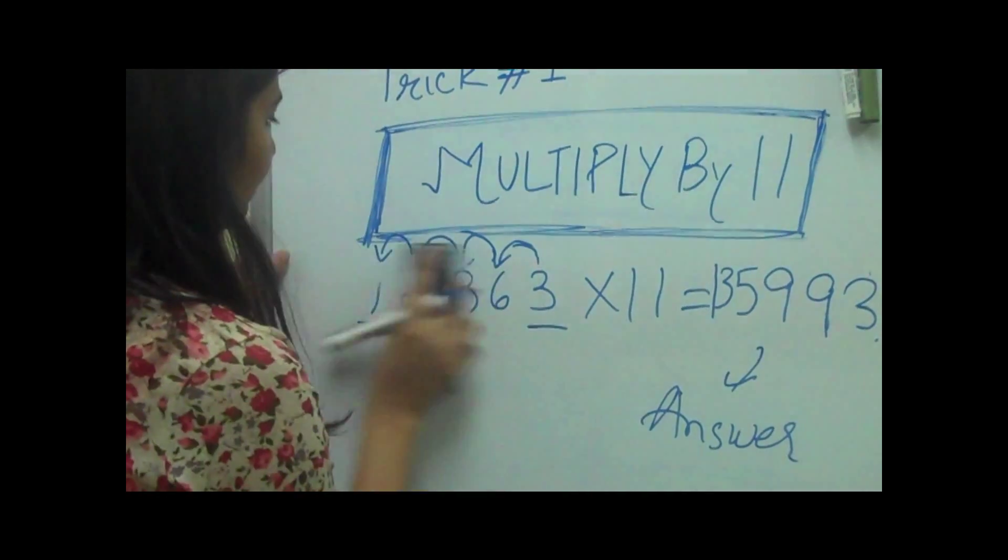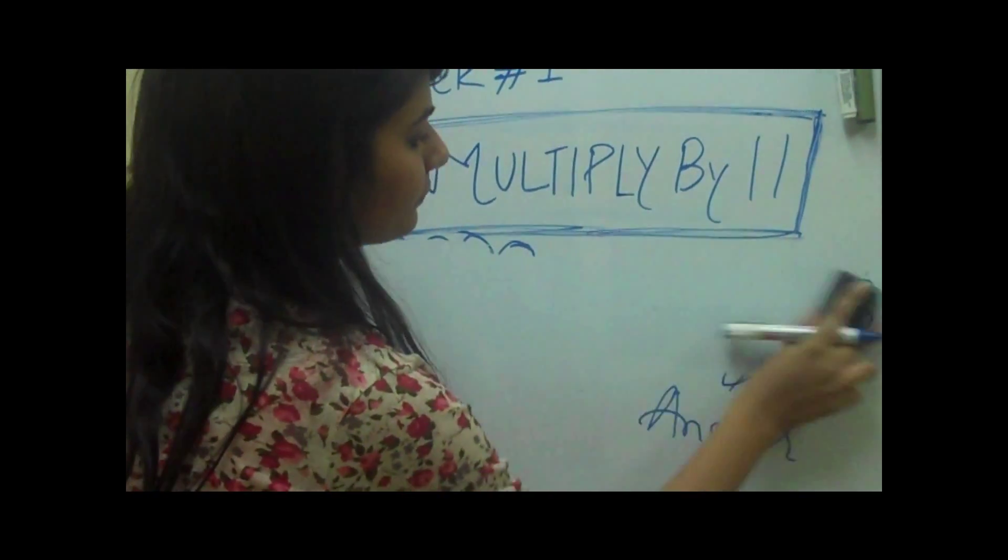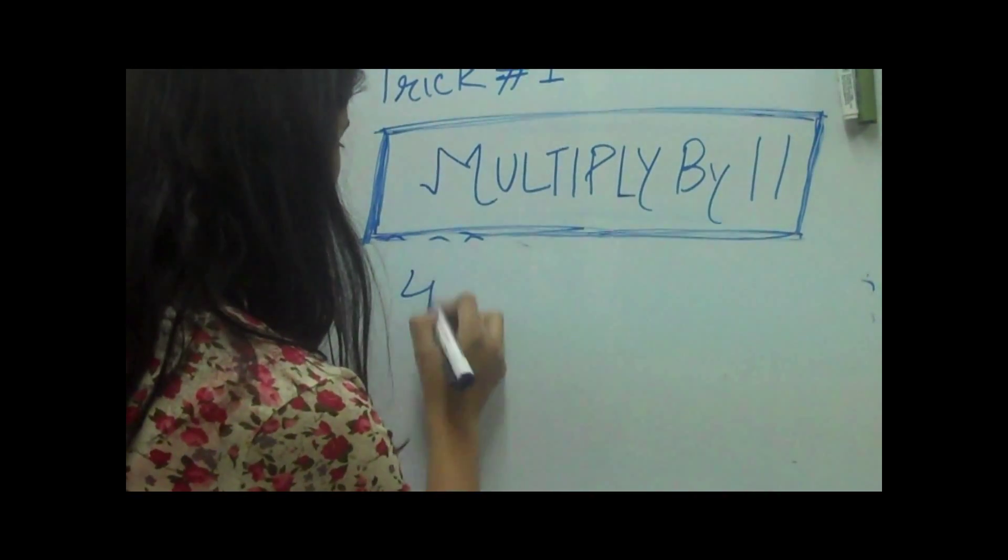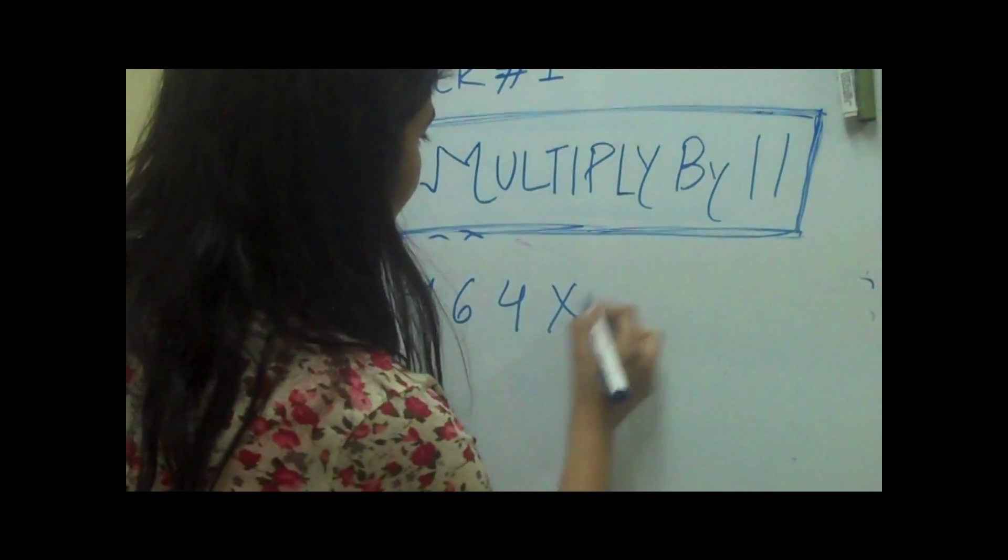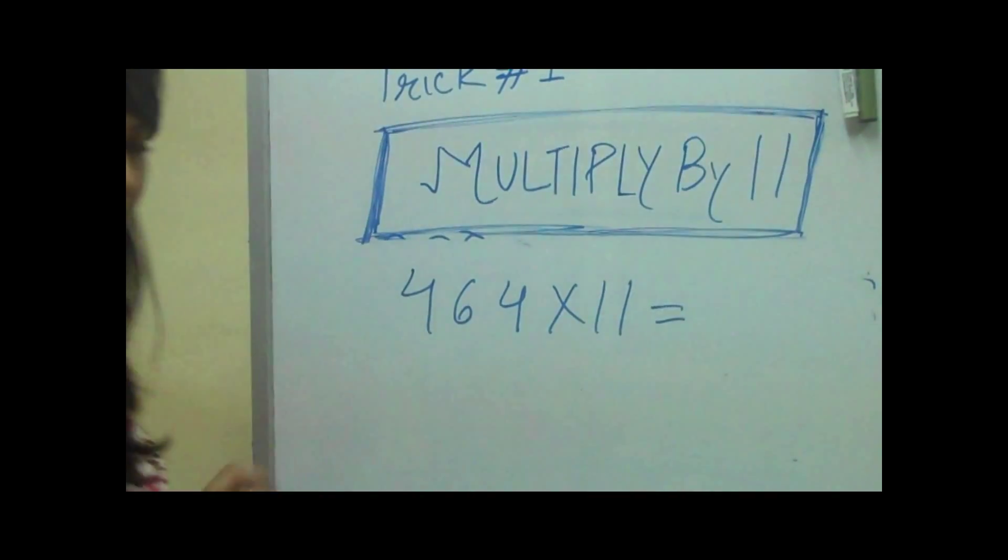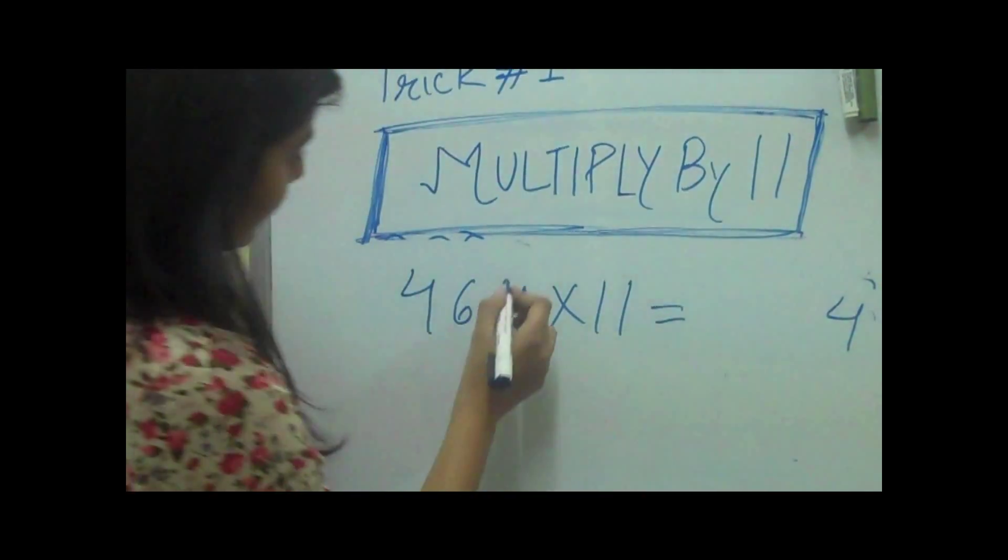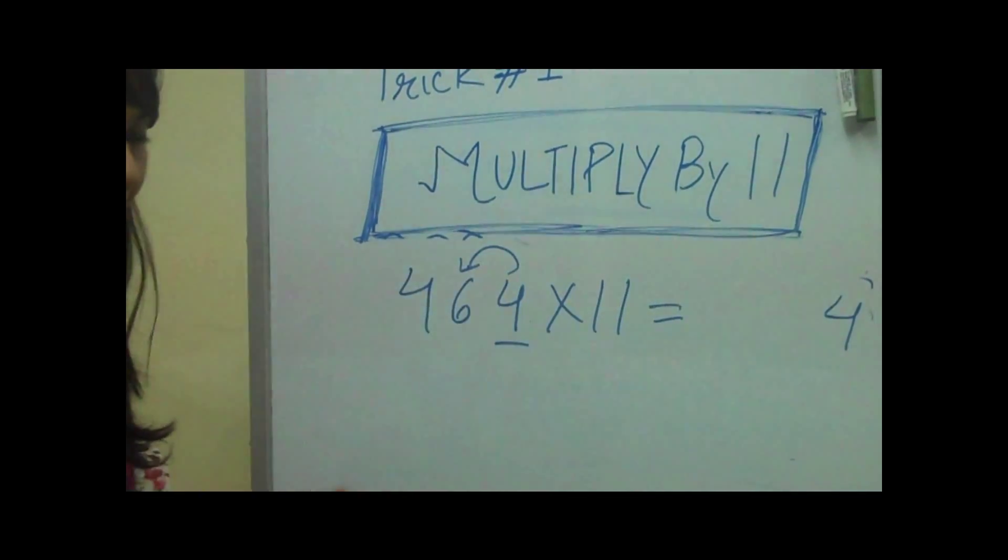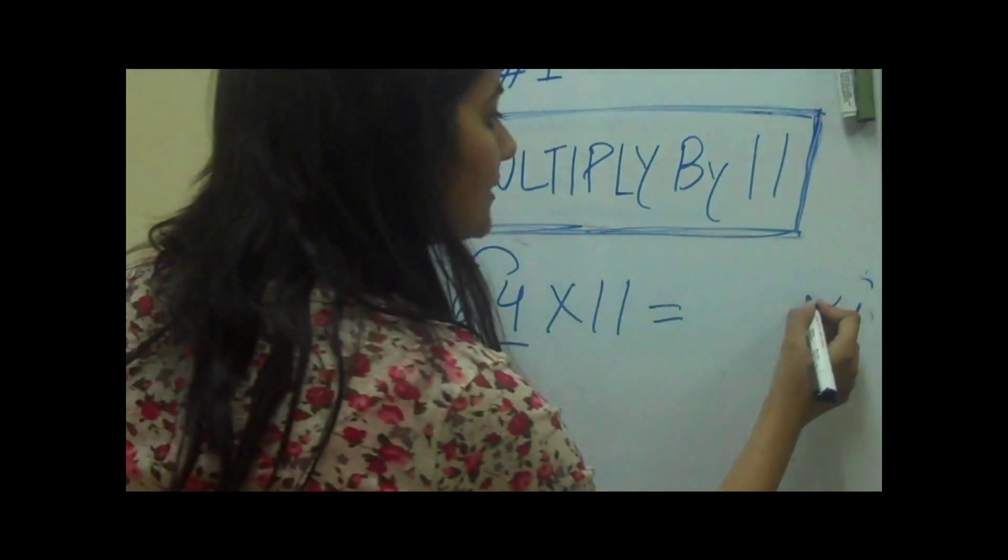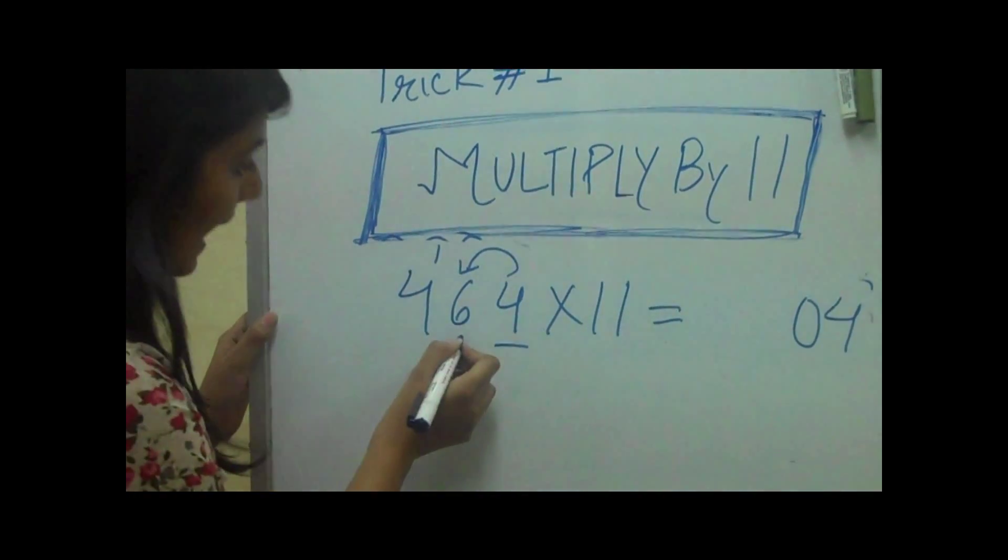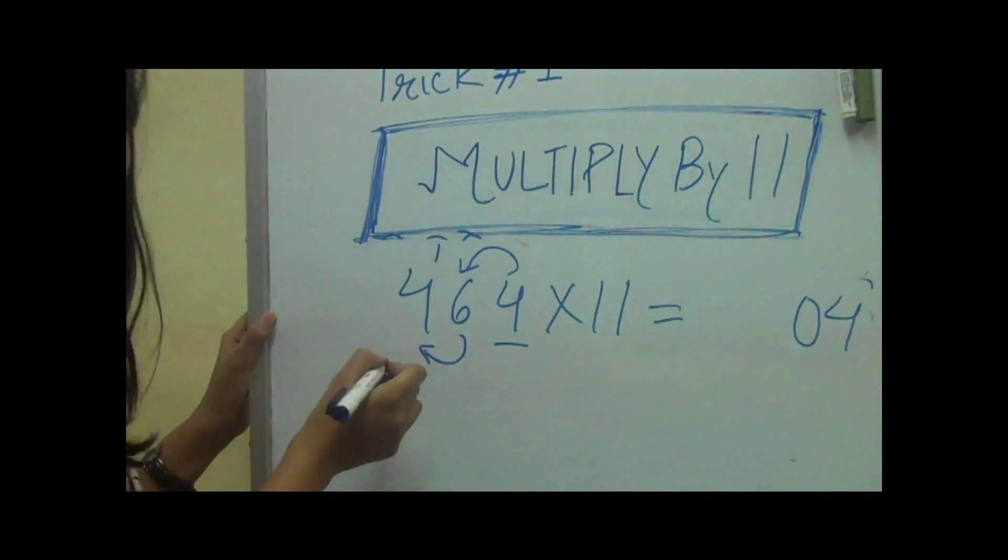Let's take another example, 464 into 11. We'll put the first number as it is. Then we add 6 plus 4 is 10. Since the number is 10, we'll put 0 and put 1 as carry. Then we'll add the next two numbers which is 6, 4 is 10 again.